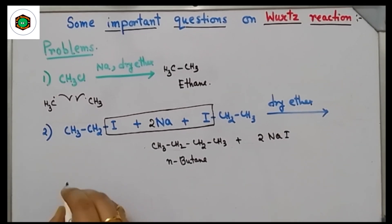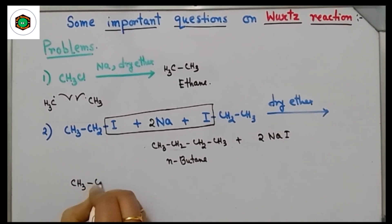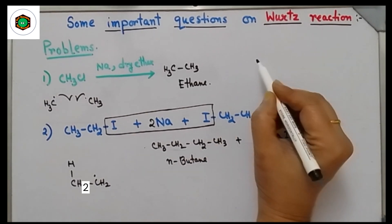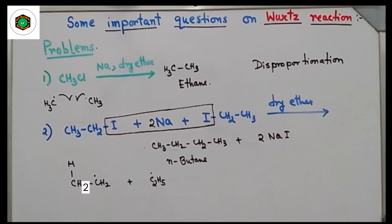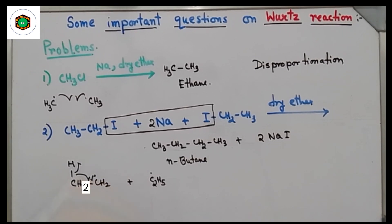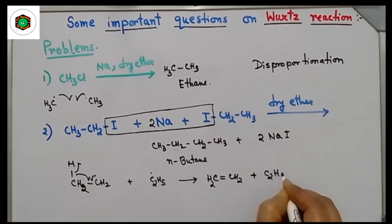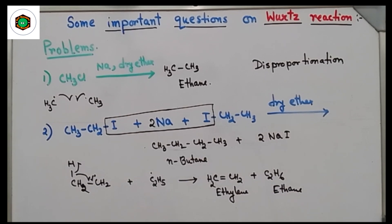The reaction takes place via the CH₃CH₂ dot (ethyl free radical). Always remember, free radicals also undergo disproportionation reaction — one radical loses H dot and another accepts it, giving CH₂=CH₂ (ethylene) and C₂H₆ (ethane). This explains the presence of ethylene and ethane in the butane obtained by Wurtz reaction — this is a very important point.